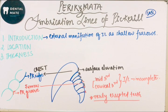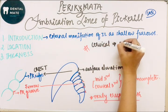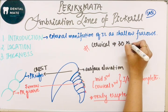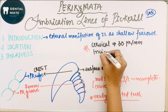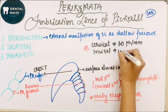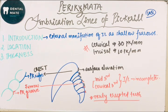Regarding the number — how many are present per area — in the cervical area there are 30 perichymata per millimetre, and in the incisal area there are 10 per millimetre. It is usually seen in the middle third and cervical third because here the incremental lines are incomplete, and it is normally seen in newly erupted teeth.